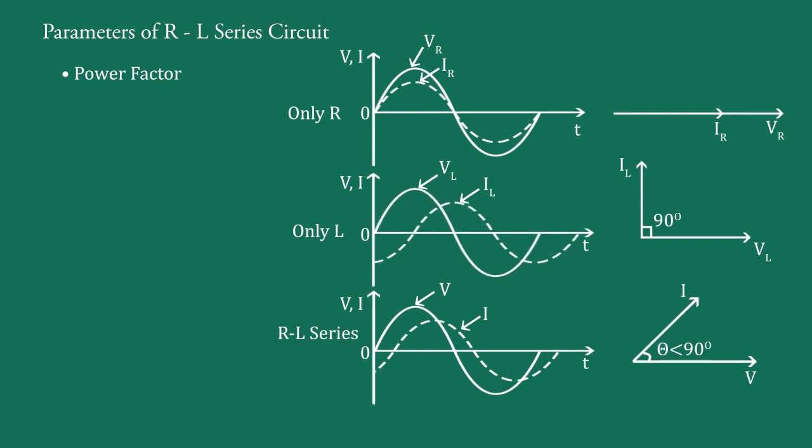In this case, the phase difference is 90 degrees. So, they are perpendicular to each other. And in this case, for the series of R and L, the phase difference between current and voltage is in between 0 to 90.